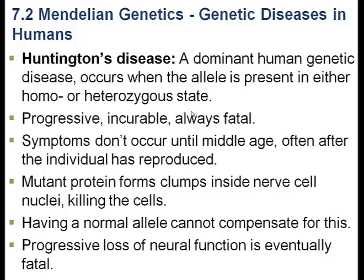Individuals with Huntington's typically don't live much past age 50, or perhaps younger if onset begins earlier. These have been some fairly depressing topics to discuss, but genetics is very important to human health, especially in the case of cystic fibrosis. Huntington's disease is not as common, but cystic fibrosis is a very common genetic disorder in North America. It's always recommended that you get genetically tested to see if you are a carrier if cystic fibrosis appears anywhere in your family history.